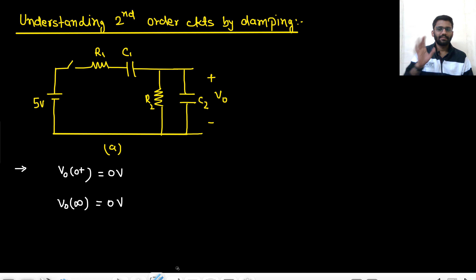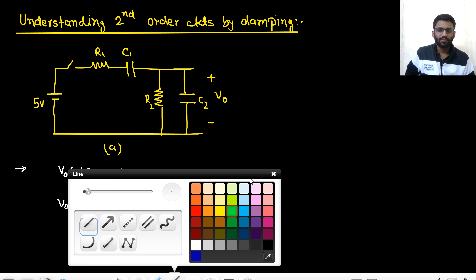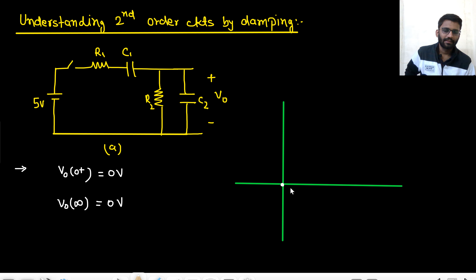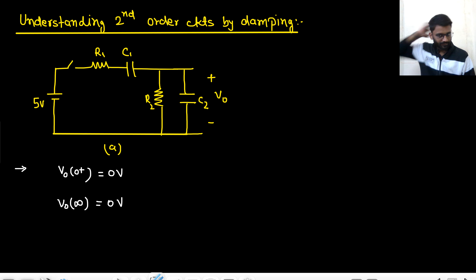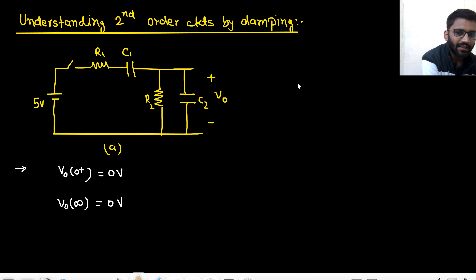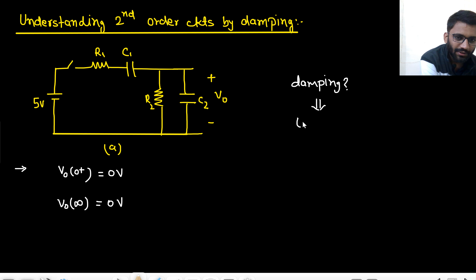This is a second order circuit, so how will the response go? The response cannot simply go from 0 to 0 in a straight line. In a second order circuit, we check damping. And for damping, you need the location of poles. If there are two different poles, it is over-damped. If there are two poles at the same location, it is critically damped. If there are two conjugate poles, it is under-damped.